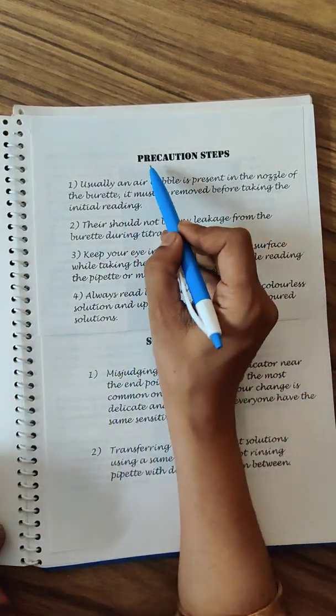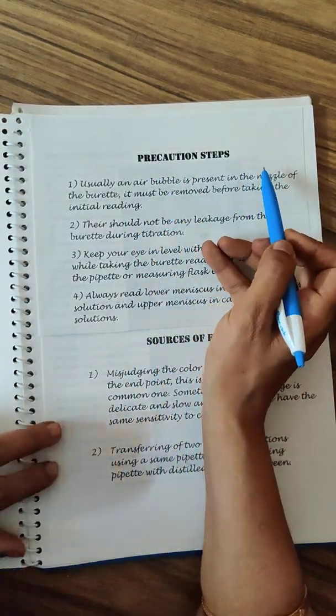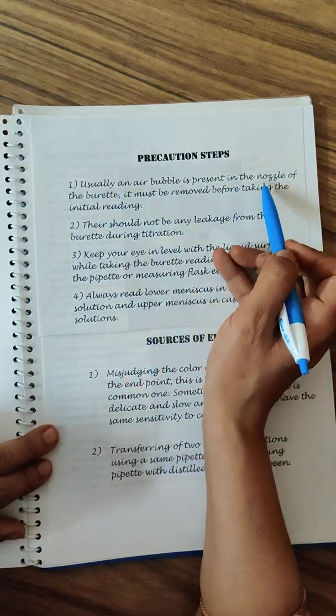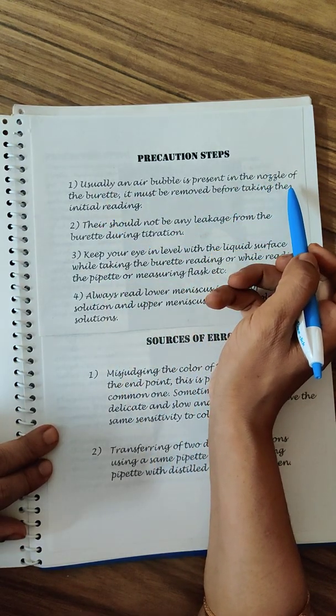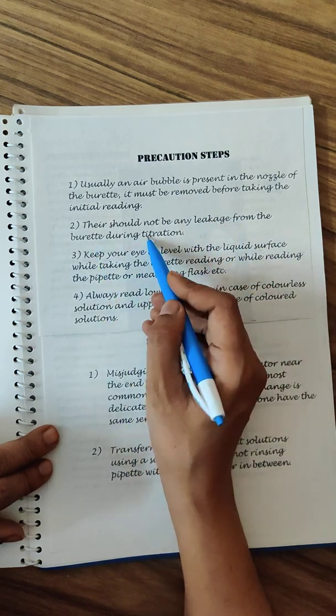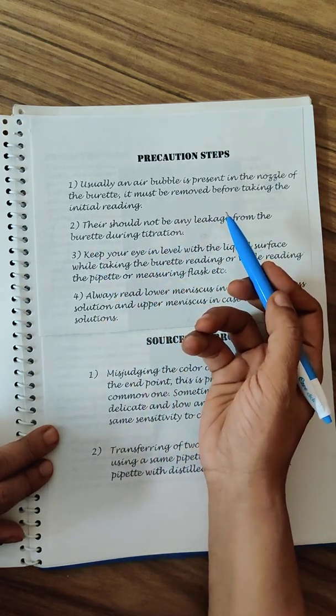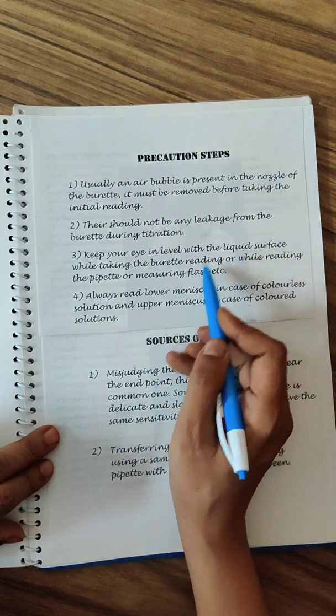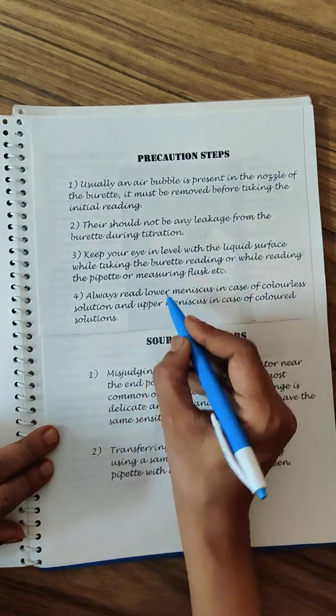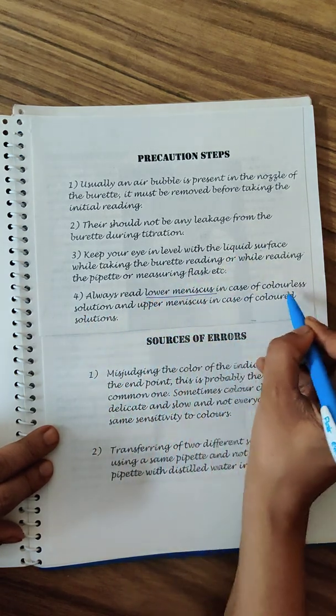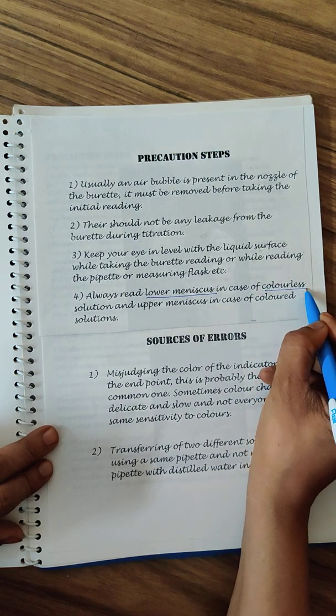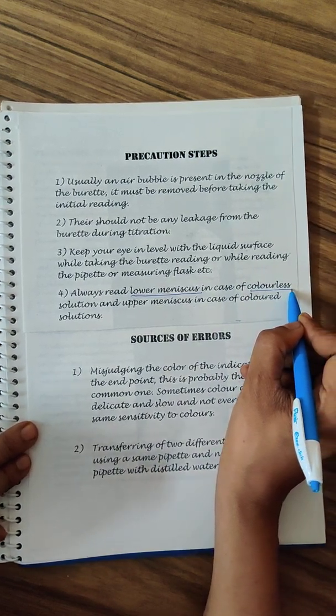You need to mention the precautions that are to be done. For example, there should be no air bubble in the burette while you are titrating. There should be no leakage from the burette. You will have to take the readings at the eye level always. You need to read the lower meniscus because the solution is colorless - your NaOH and HCl both are colorless.